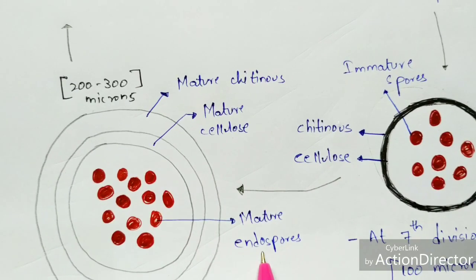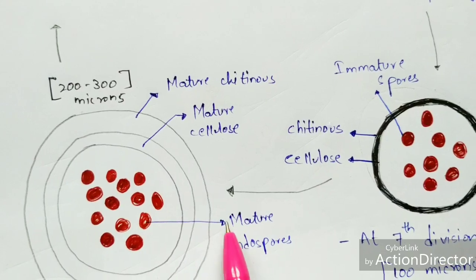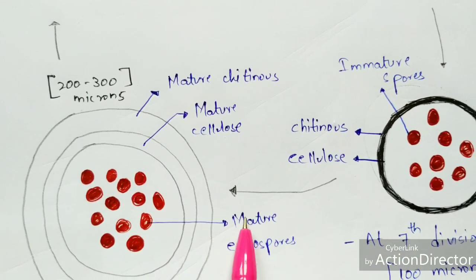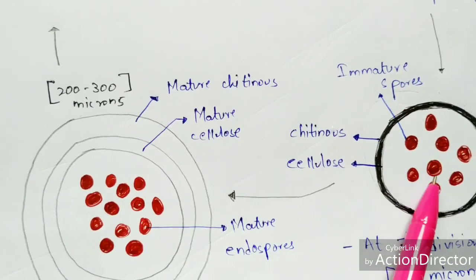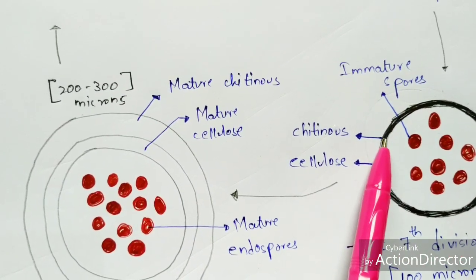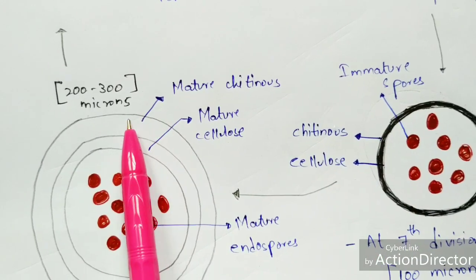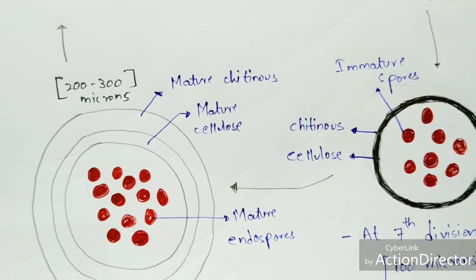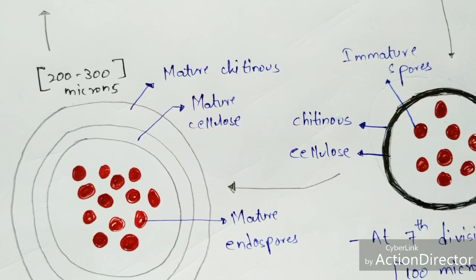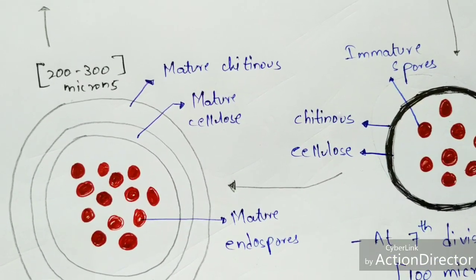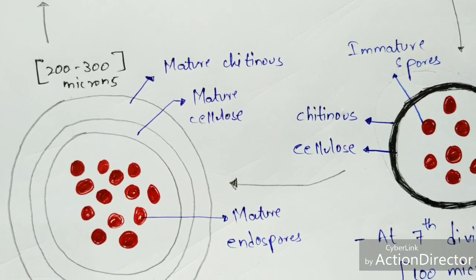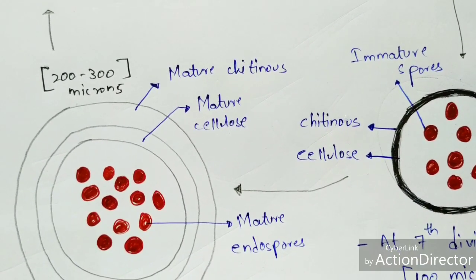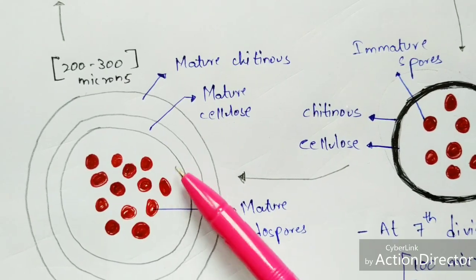In the mature stage, mature endospores are formed. The cell walls also get matured — mature chitinous and mature cellulose are present. These mature endospores undergo several mitotic divisions inside the cytoplasm, causing the number of mature endospores to increase.